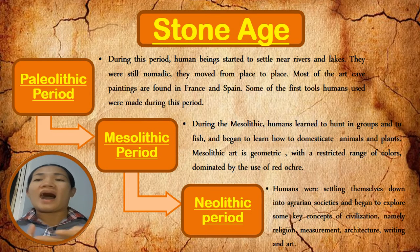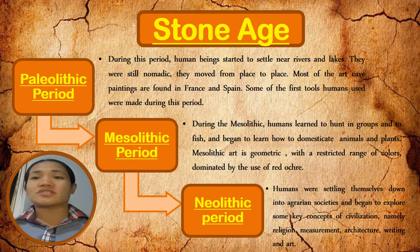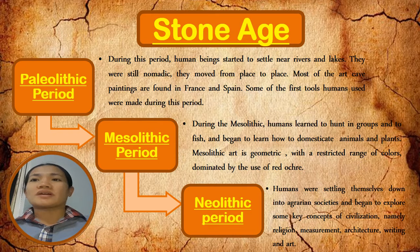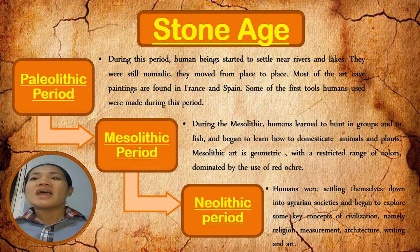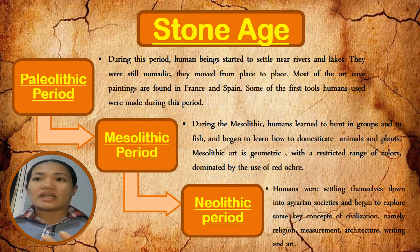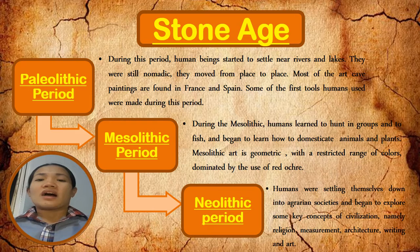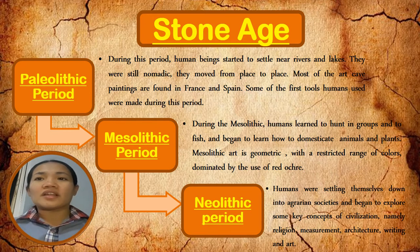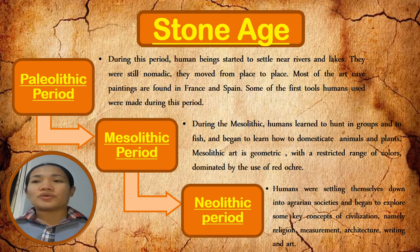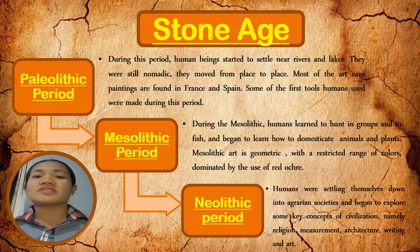In the Mesolithic period, they started to hunt in groups and to fish, and they started to domesticate animals and plants for their survival. The last period is the Neolithic period. Humans were settling themselves down into agrarian societies — they started to plant more and began to explore key concepts of civilization, namely religion, measurement, architecture, writing, and art. We are still building on what Neolithic period people started, as they became civilized and began to write and do architecture.